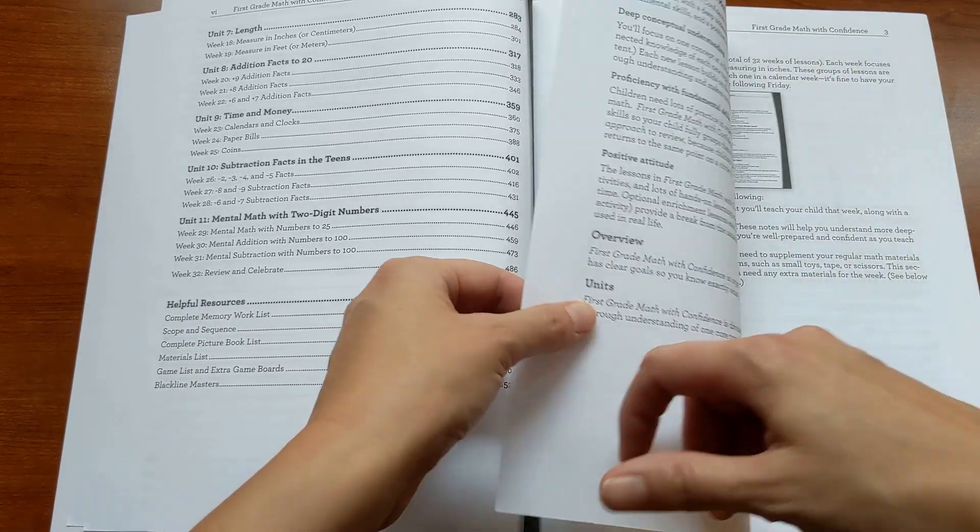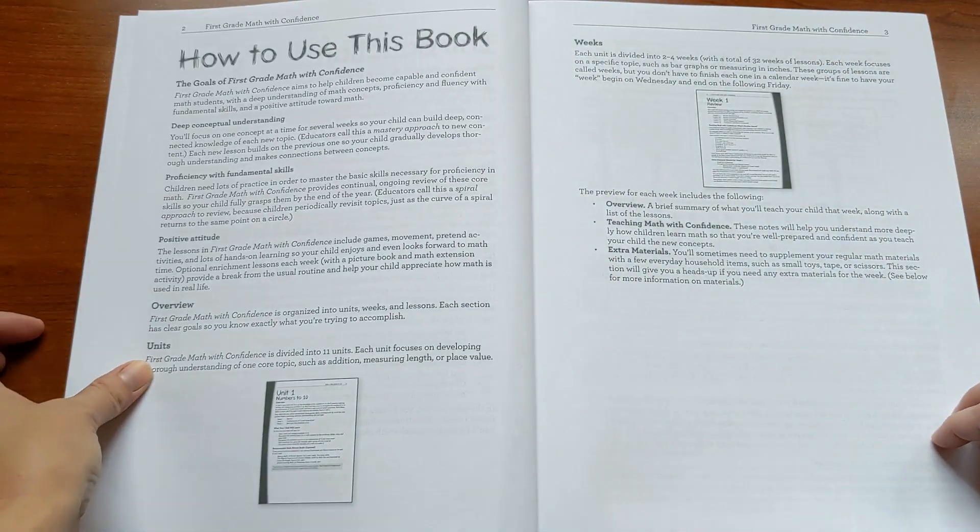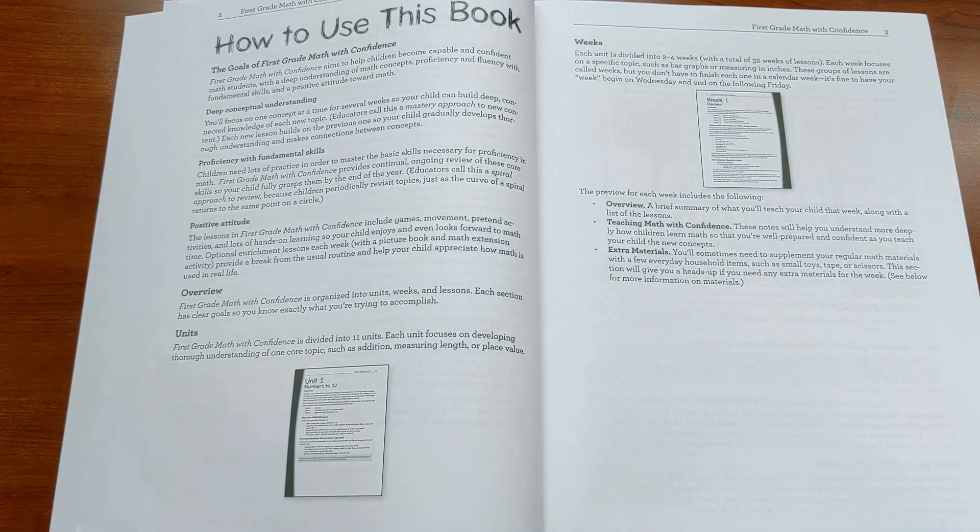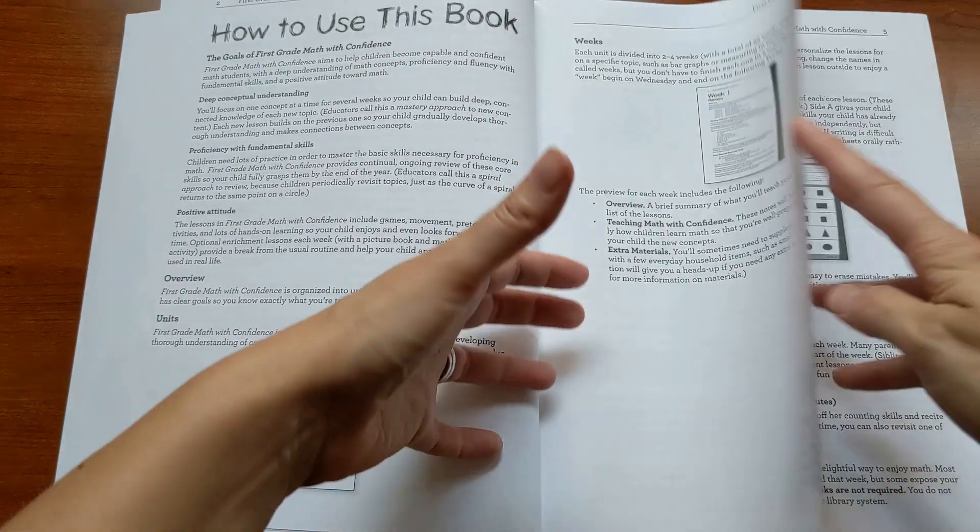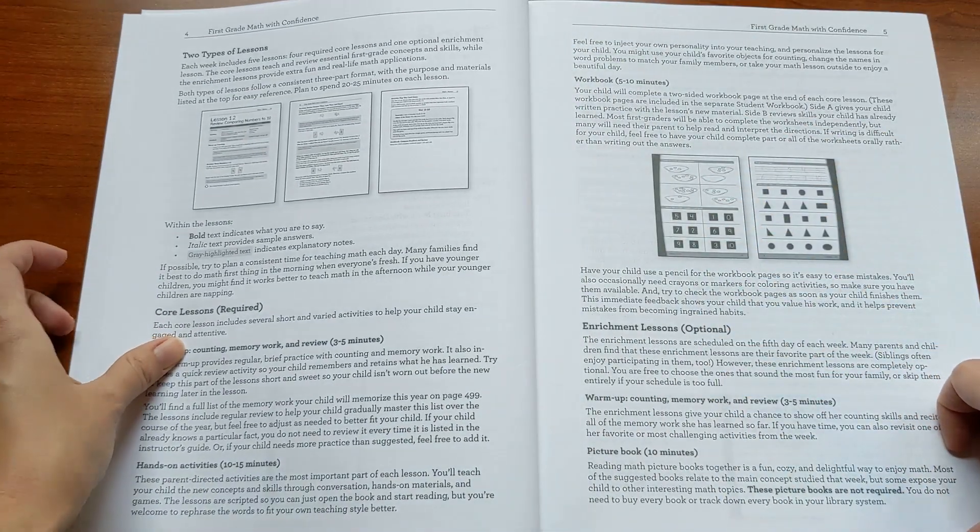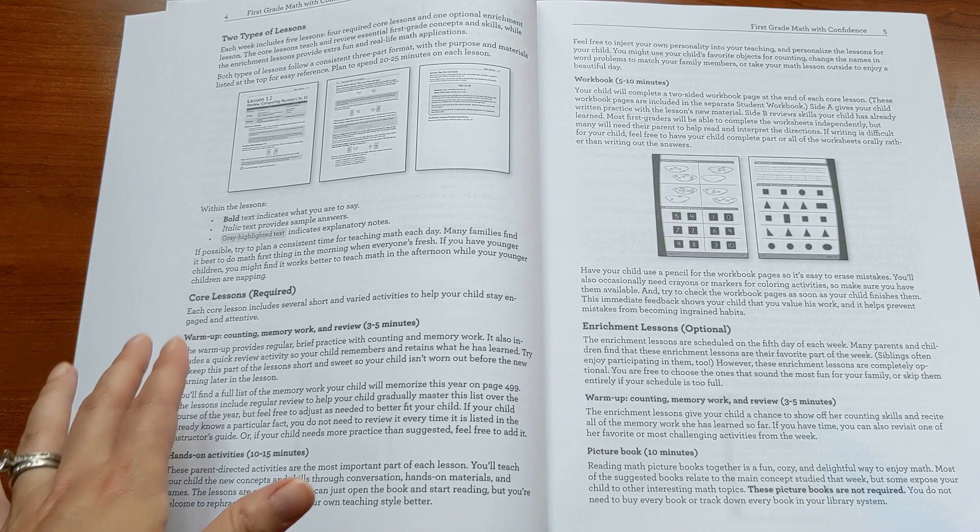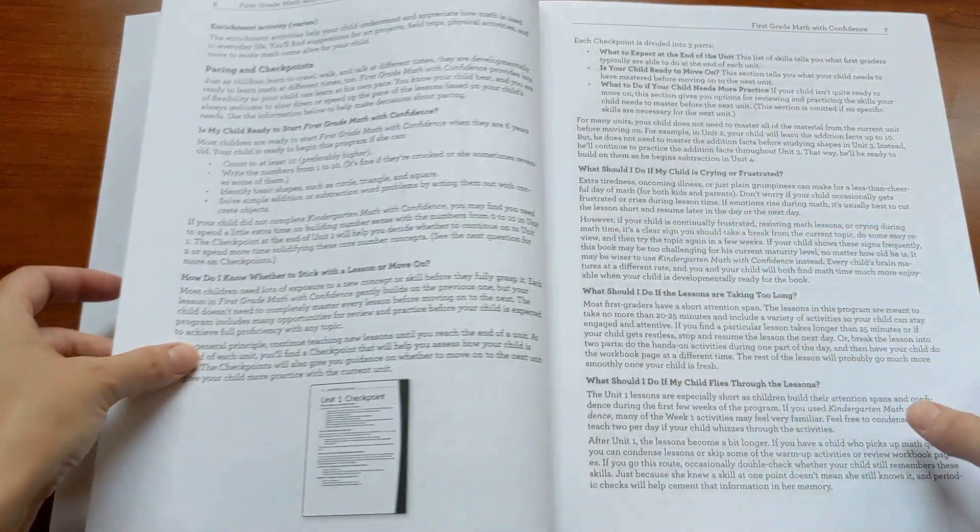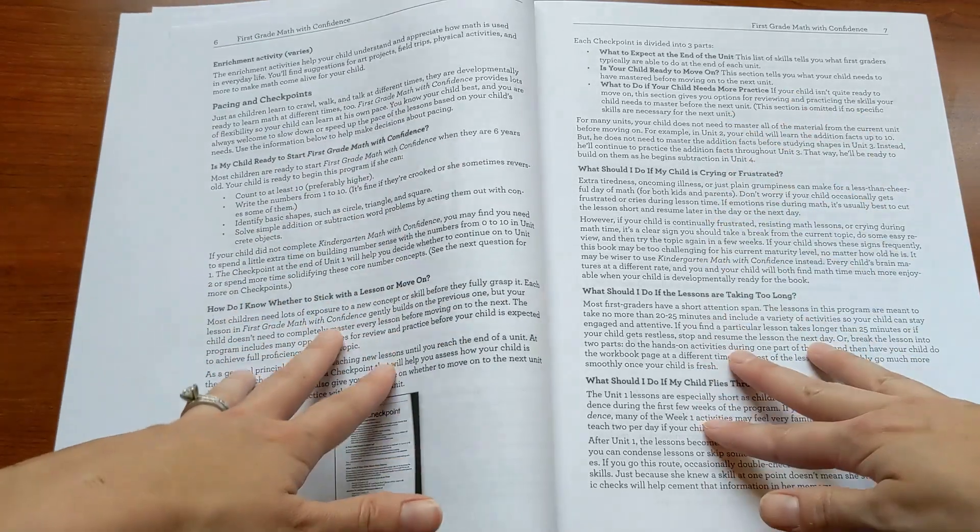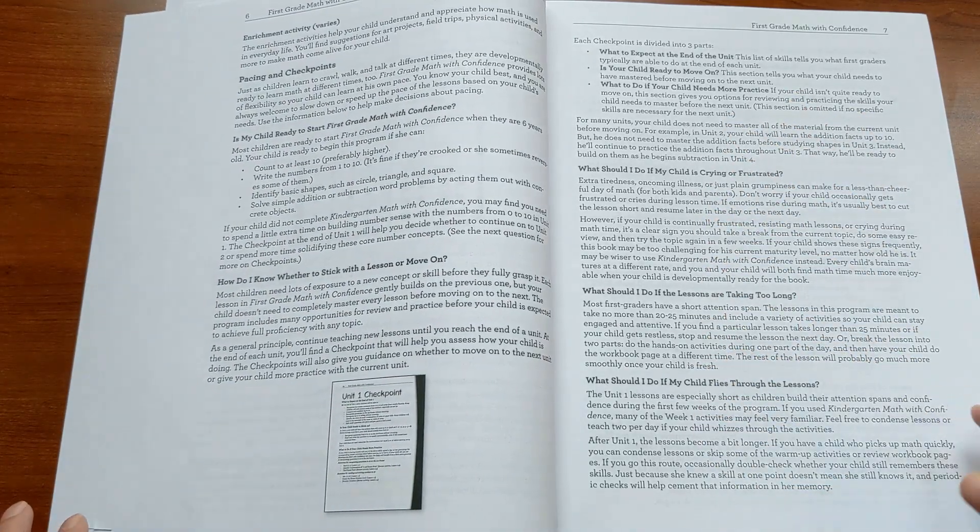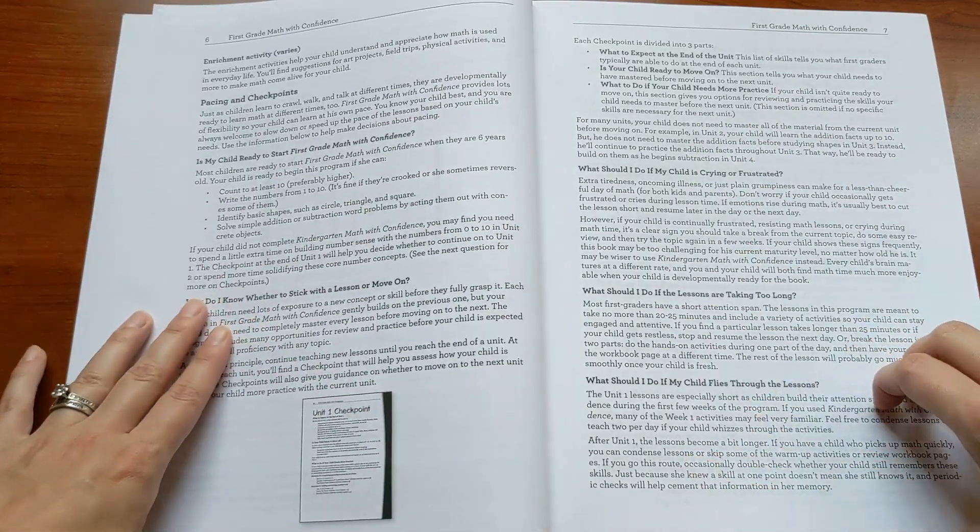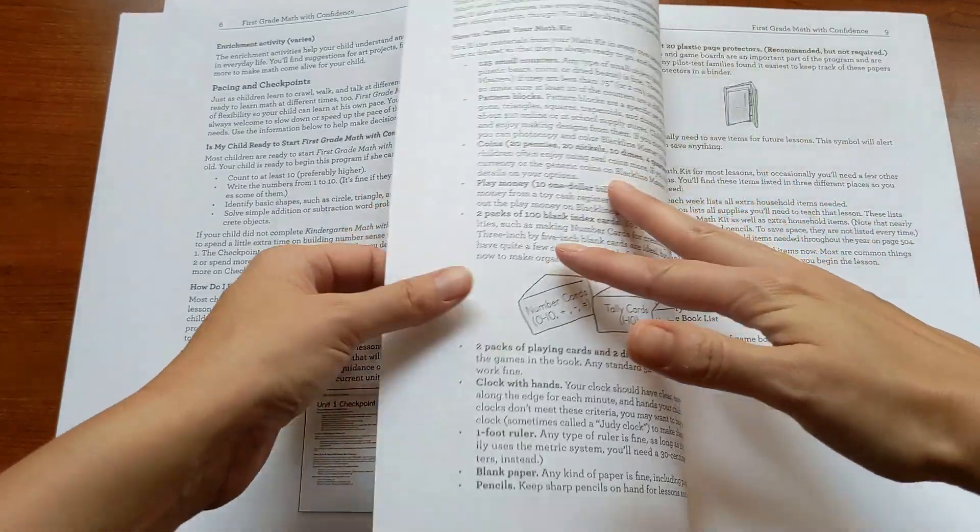I highly recommend you give this introduction a close read. I put lots of tips and important things to understand to really make the most of using the curriculum. It's an overview of how it's organized, the two types of lessons - core lessons and enrichment lessons - and there's a lot here on pacing because I know that's one of the things parents struggle with the most. How do I know when I should move on? How do I know if I'm using the right level? There's really good information about how to handle all those situations.